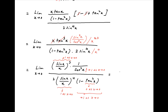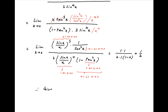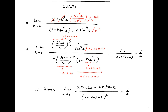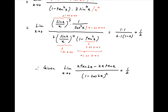Therefore the given limit is equal to 1 upon 2 times (1 minus 0), which is equal to 1/2. Therefore the value of the given limit is equal to 1/2, which is the required answer.